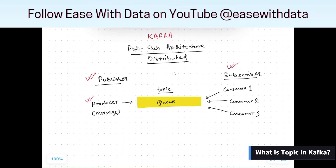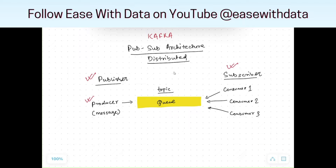A message can only be published for a particular topic. Consider in our real-life scenario: you subscribe to a newsletter. The newsletter can be of a technology topic, or this newsletter can be of a healthy lifestyle. Here the topic is the healthy lifestyle or the technology, and you are the subscriber who will subscribe to that newsletter.